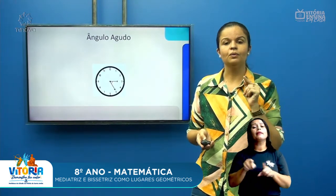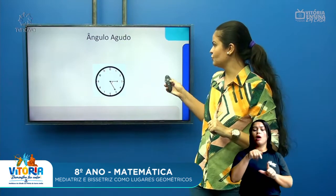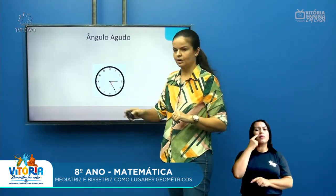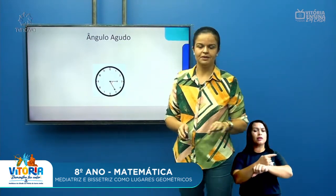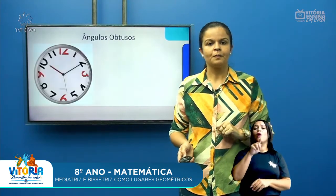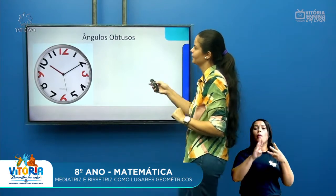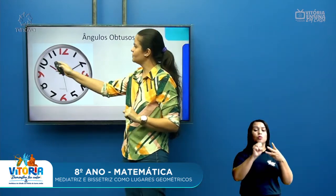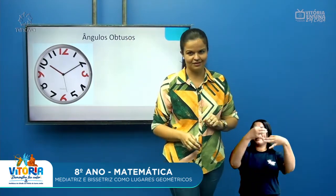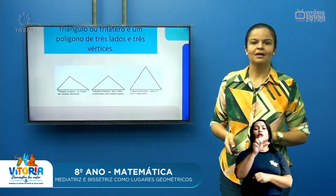Nós também temos o ângulo agudo. Aqui o ponteiro está marcando um ângulo agudo. E aqui tenho um exemplo de ângulo agudo e de ângulo obtuso. O ângulo obtuso é aquele que tem uma abertura maior que 90 graus.